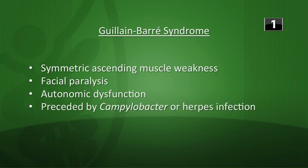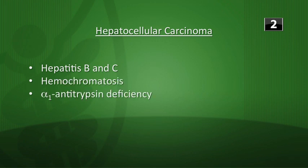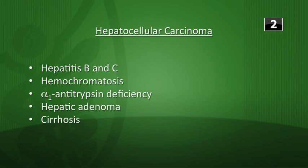Next, what are the risk factors for the development of hepatocellular carcinoma? Hepatitis B and C, hemochromatosis, alpha-1 antitrypsin deficiency, hepatic adenoma, and cirrhosis — any type of cirrhosis.